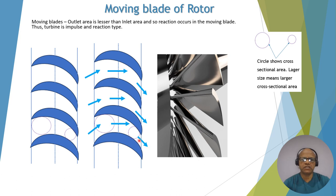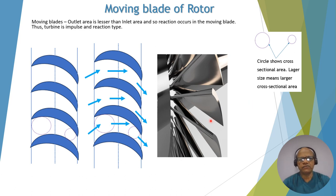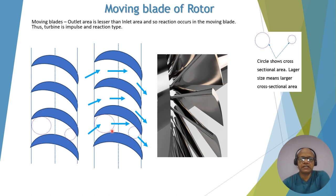The higher relative velocity helps in the movement of the rotor. This is an actual photograph — you will see that the inlet has a larger area and the outlet has a smaller area for the impulse and reaction turbine. Please note that the reaction action occurs only in the moving blades.